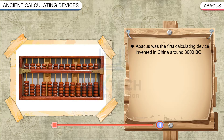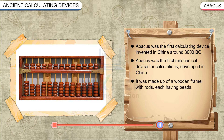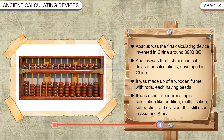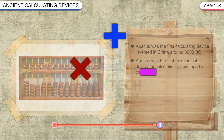Abacus was the first calculating device invented in China, around 3000 BC. It was the first mechanical device for calculations, made up of a wooden frame with rods, each having beads. It was used to perform simple calculations like addition, multiplication, subtraction, and division. It is still used in Asia and Africa.